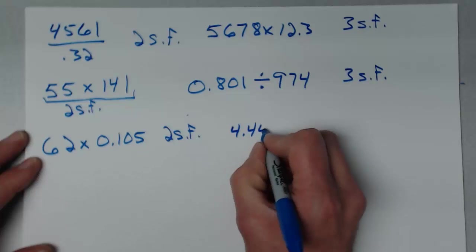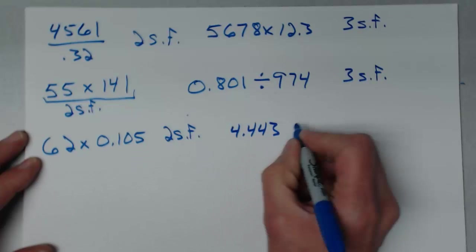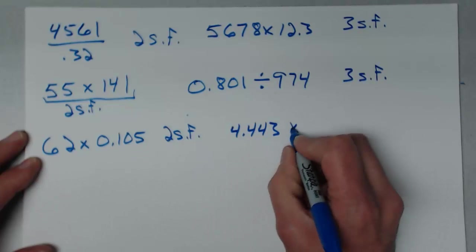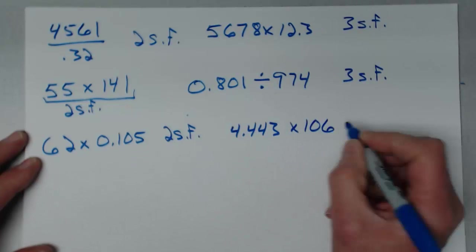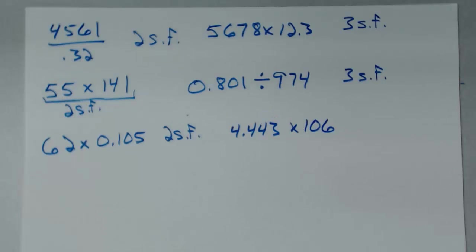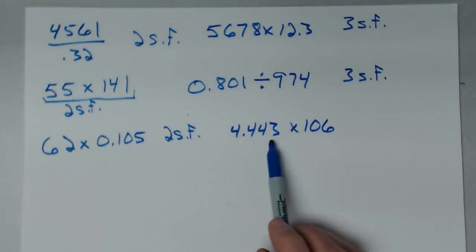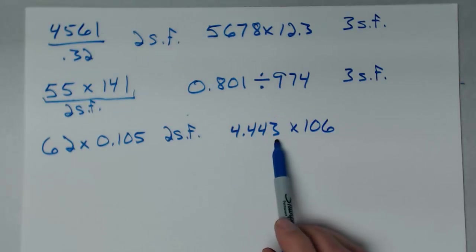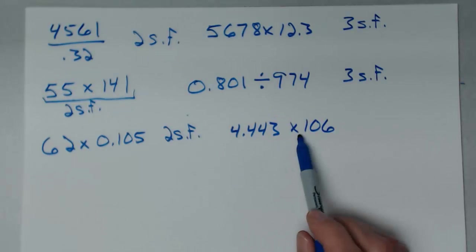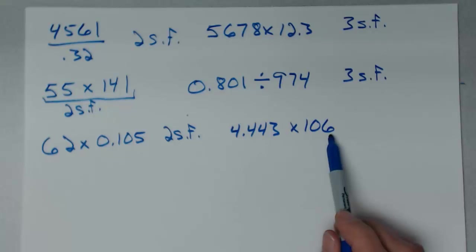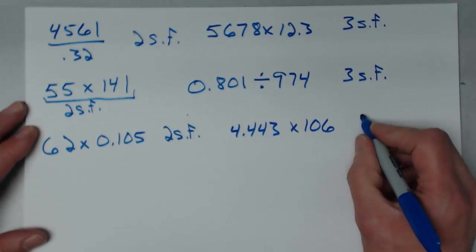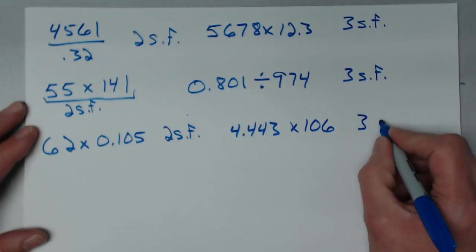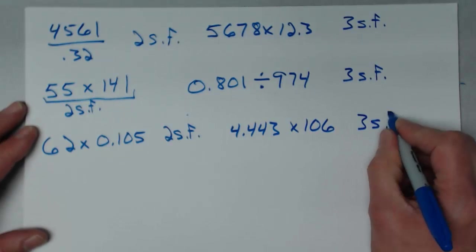Next: 4.443 times 106. This number has four significant figures and 106 has three. My result can have only three significant figures.